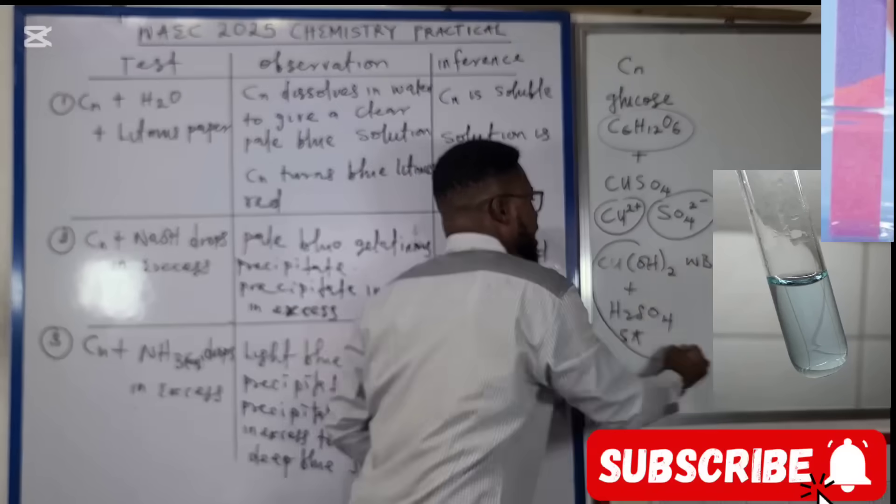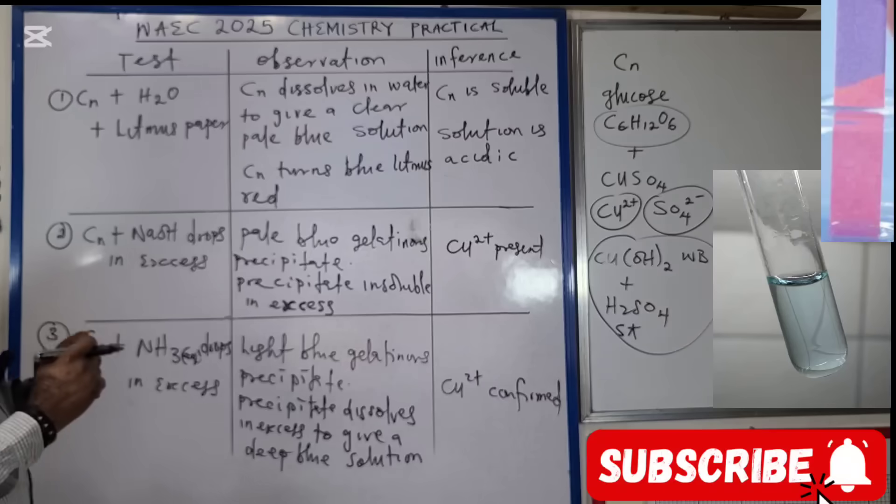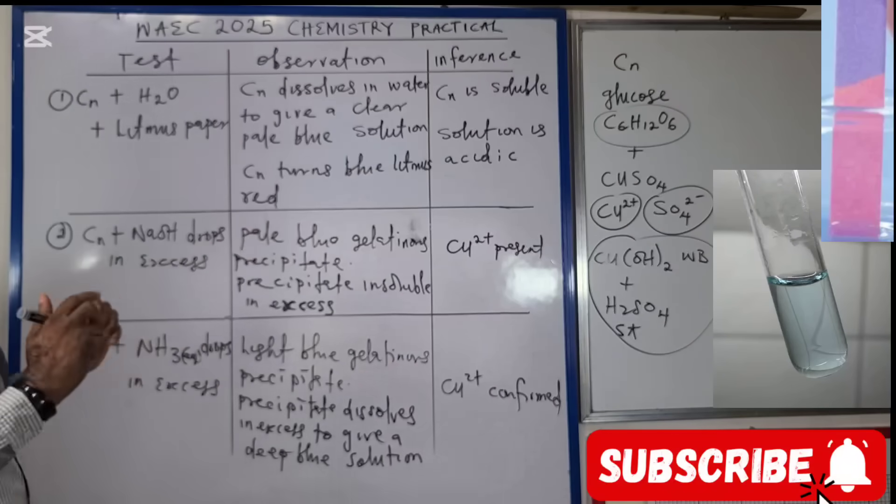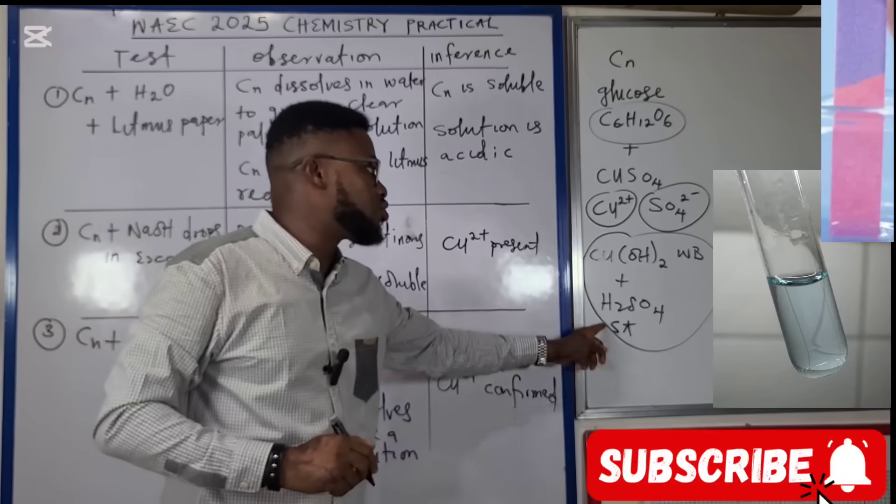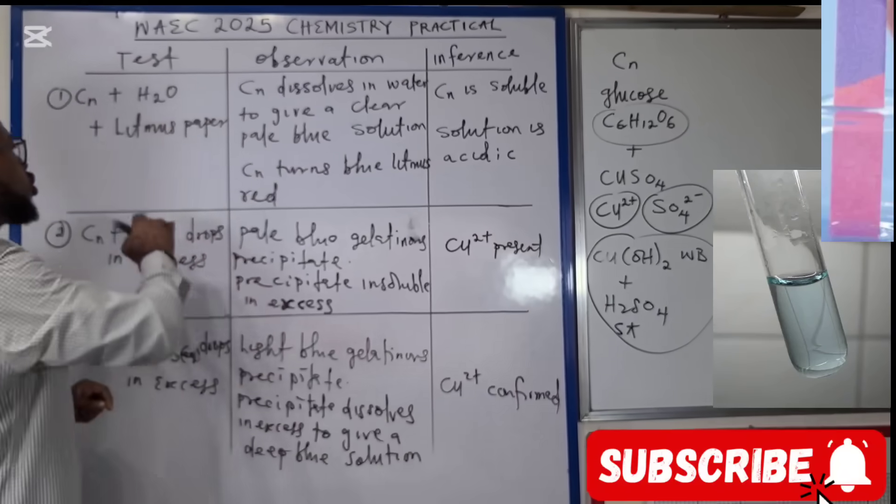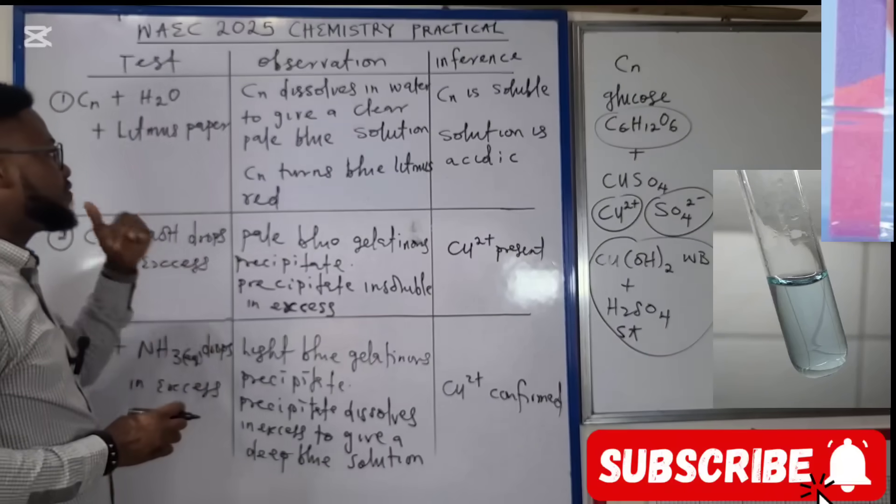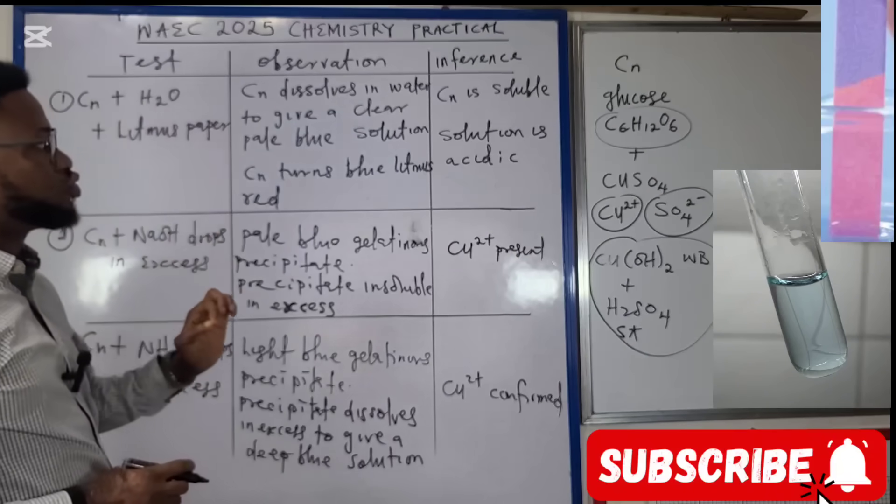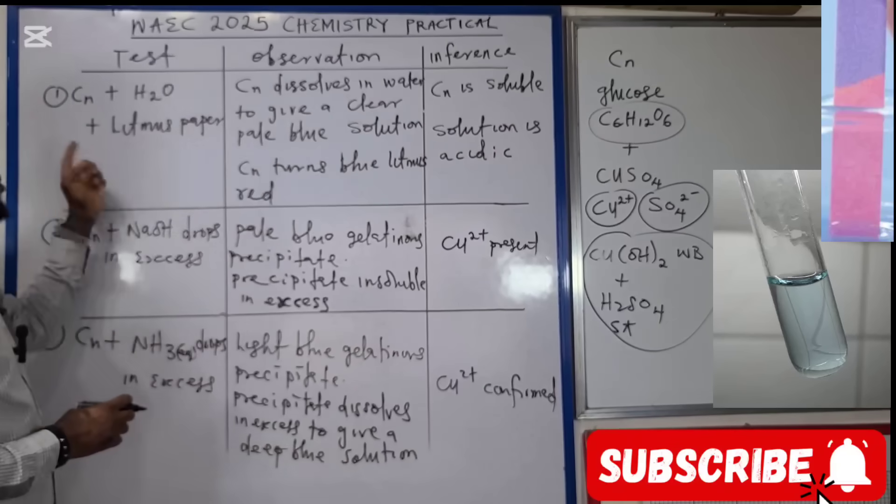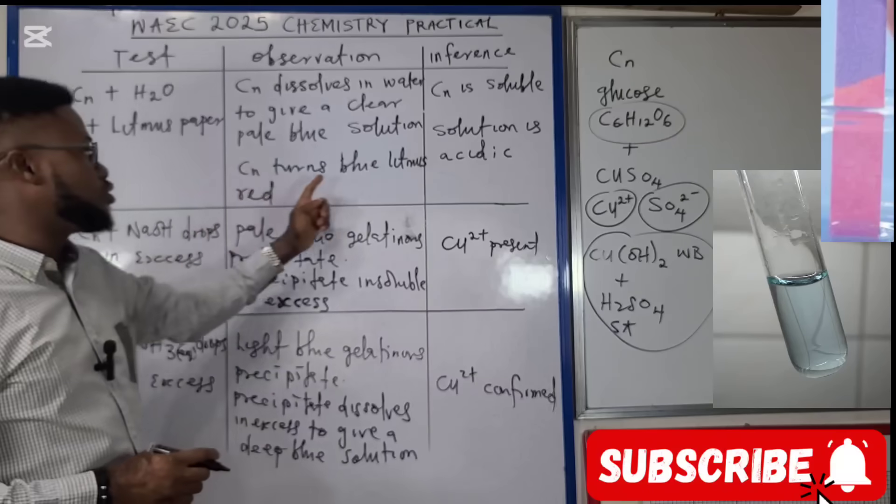Generally, when we test the resulting solution with a blue litmus paper, it is going to turn red because this is a strong acid versus a weak base to give us copper sulfate. CN plus H₂O - CN dissolves in water to give a clear pale blue solution, meaning CN is soluble. When we test the solution with blue litmus paper it turns red, so the solution is acidic.